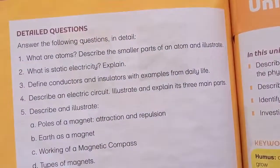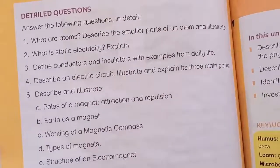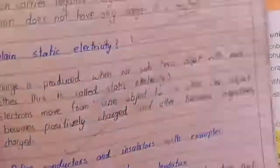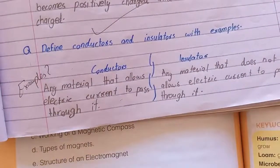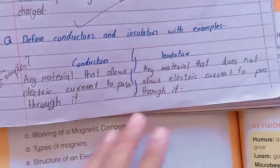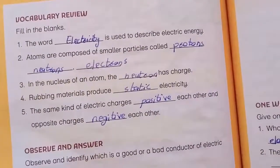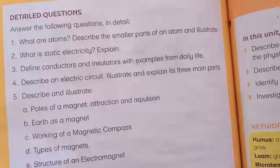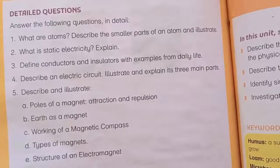Now we want to define conductor and insulator with examples from daily life. A material that allows electric current to pass through it is called a conductor. A material that does not allow electric current to pass through it is called an insulator. For example, in the conductor category you can write metal, and in the insulator category you can write wood or paper.